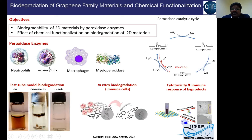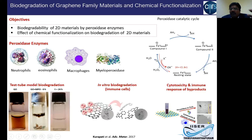Our immune cells — neutrophils, eosinophils, and macrophages — contain granulocytes that hold myeloperoxidase. When inflammation occurs or a foreign body interacts with these cells, the immune cells get activated, release the granulocytes, and release myeloperoxidase, which can oxidize foreign materials.